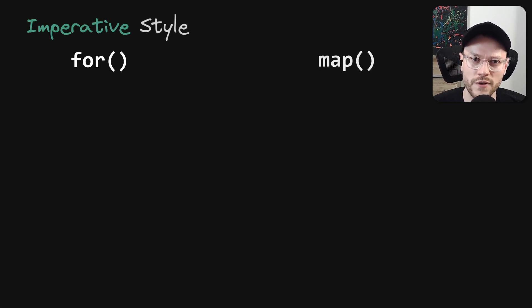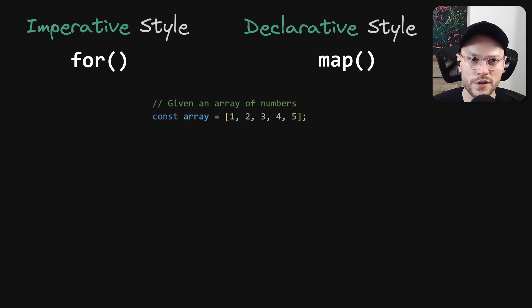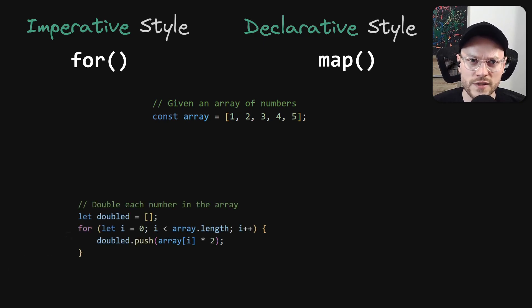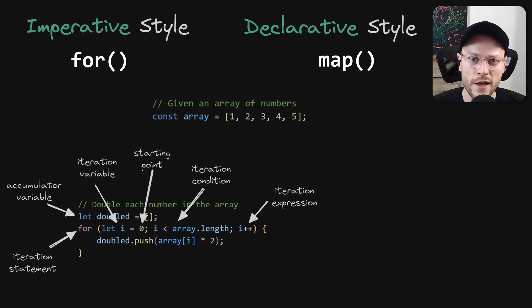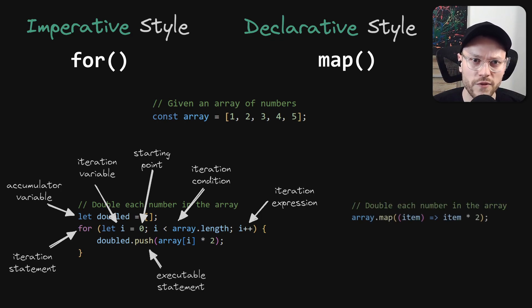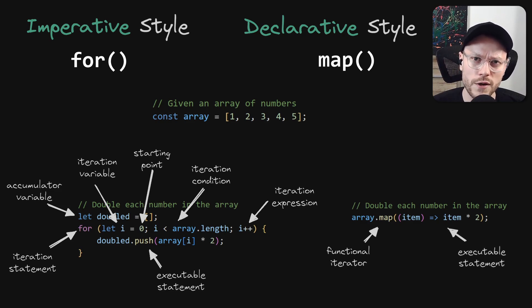And what about code? The classic, very popular example is the for loop versus the map function. To double each number in a given array, the for loop defines a lot of things to get the job done: an accumulator, an iterator, a starting point, a condition, an iteration expression, and a body with our executable statement. In contrast, the map function simply says to map through the array and apply the same statement. So map is often referred to as the counterpart to the for loop.